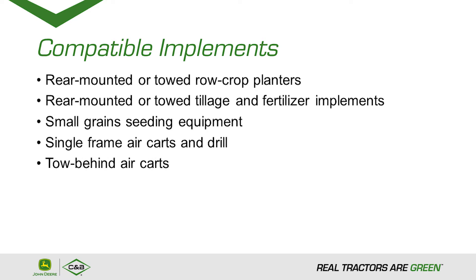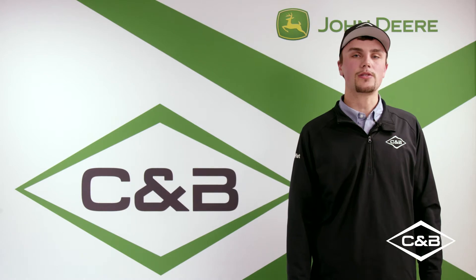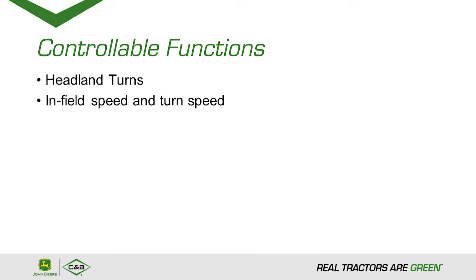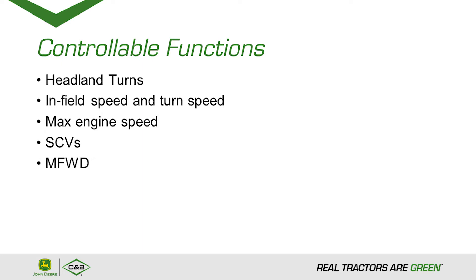There are a list of controllable functions that Auto-Track Turn Automation is able to control, and that includes the headland turn itself, both in-field and turn speed, max engine speed, SCVs, front wheel assist, differential lock, rear or front PTO, and the three-point hitch.